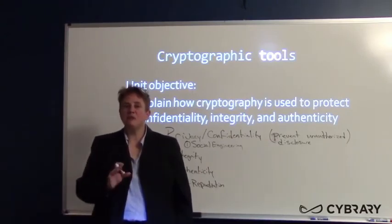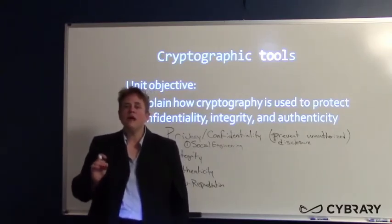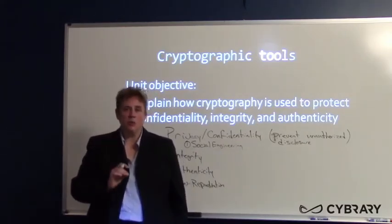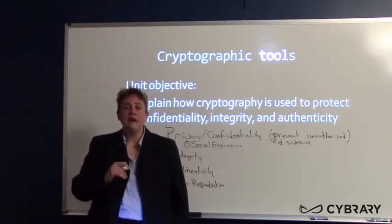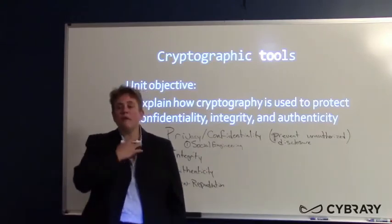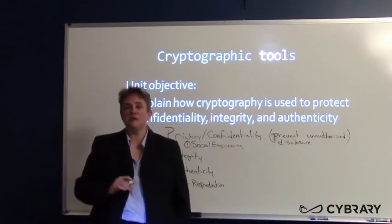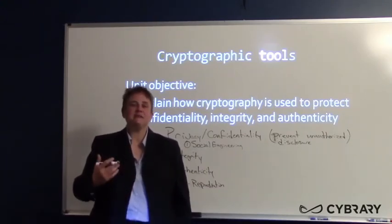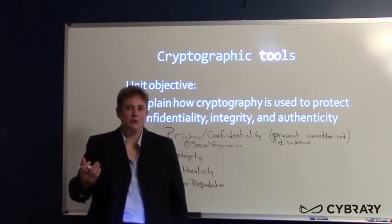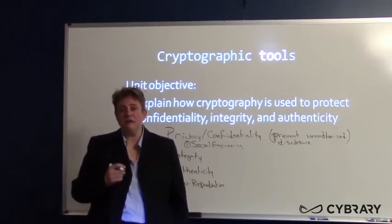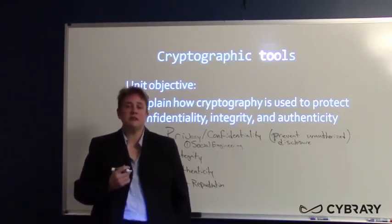You can put all the technical controls in place that you want — there is not a single control you can put in place that somebody can't bypass. That's just a fact. We'll talk about physical security briefly, like an eight-foot fence to deter determined intruders. But what height fence will prevent an intruder? There is no height fence that will prevent one. You've got a 15-foot fence, I've got a 16-foot ladder.